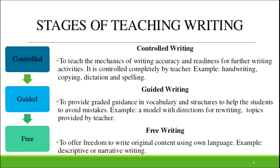Now we will discuss about stages of teaching writing. Writing can be of different types: controlled writing, guided writing and free writing. Controlled writing teaches the mechanics of writing, accuracy and readiness — it is controlled completely by the teacher. Examples include handwriting, copying, dictation and spelling. Guided writing means providing graded guidance in vocabulary and structures to help students avoid mistakes, such as a model with directions for rewriting topics provided by the teacher. Free writing means offering students the chance to write original content using their own language — for example, descriptive or narrative writing.